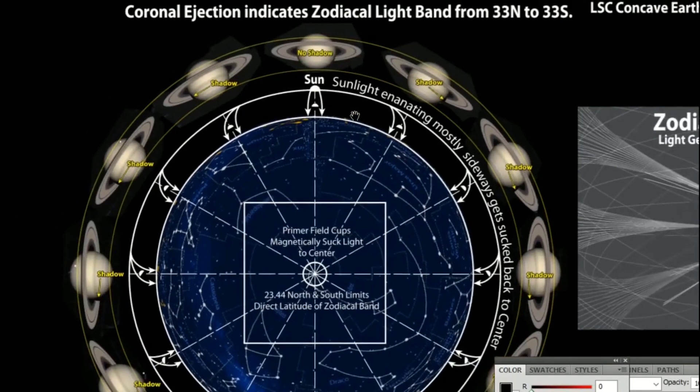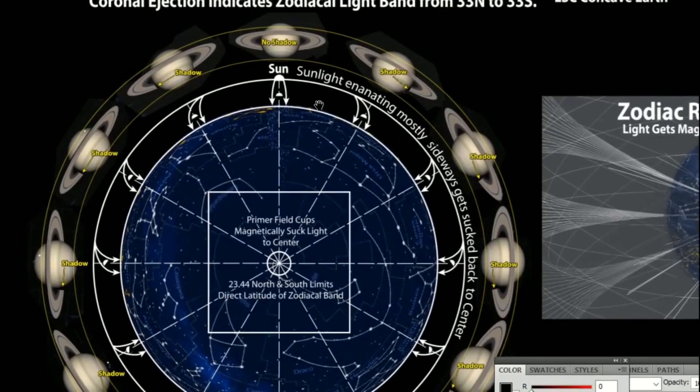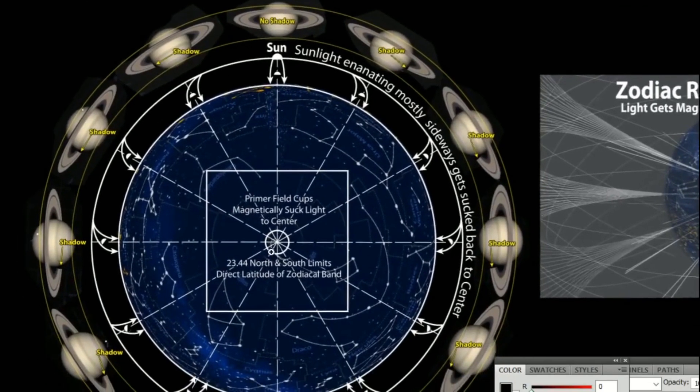What I have here, the top view of the celestial sphere in the center of the Earth, we have in the very center the Primer Field. If you watched my video before, I talked about how in the center I call it the Tree of Life, and it's magnetically sucking in the light. There's a specific zone at about 33 degrees north and south.